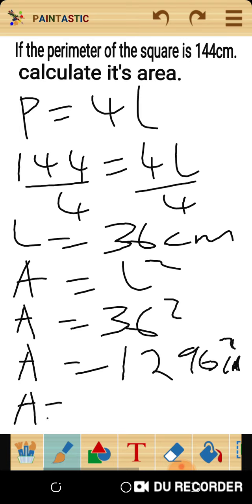Let me write it properly: 1296 square centimeters. That's the area of the square.